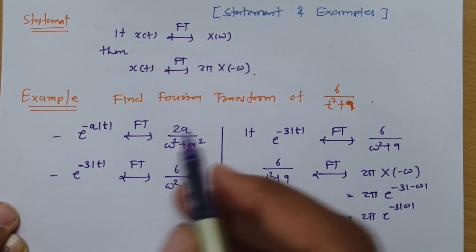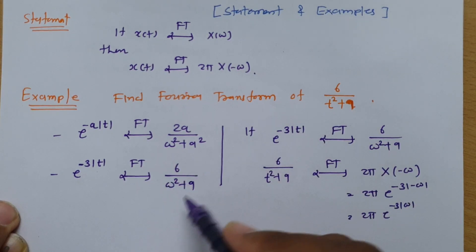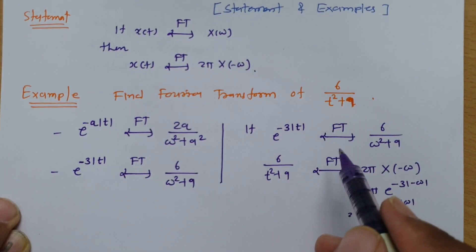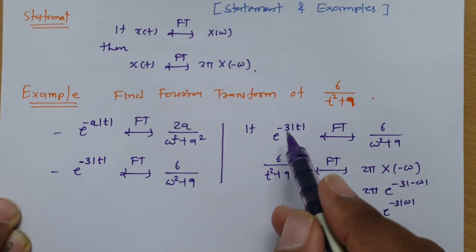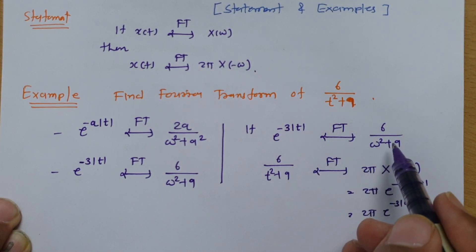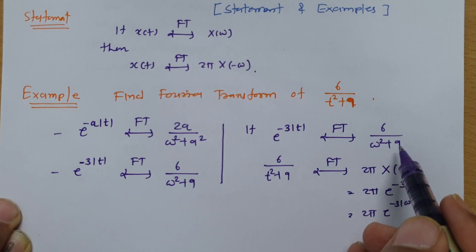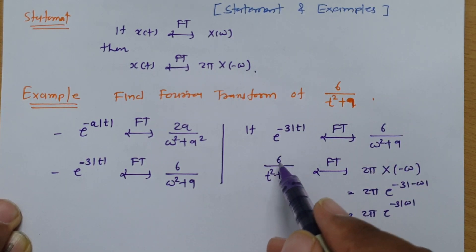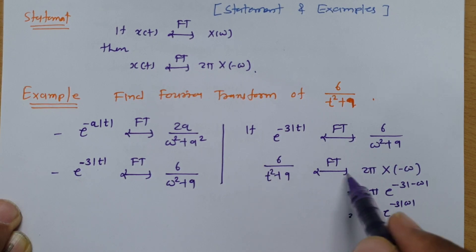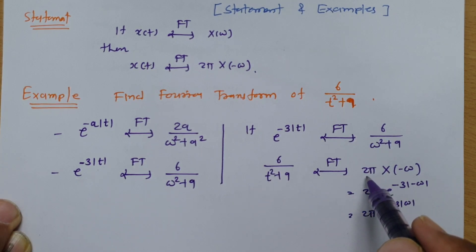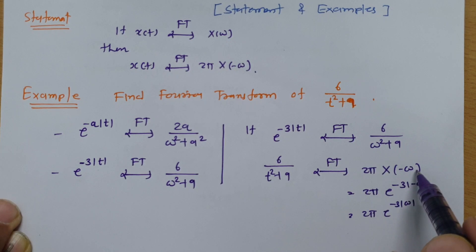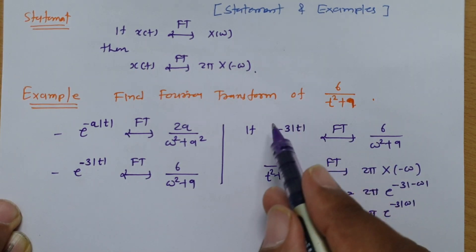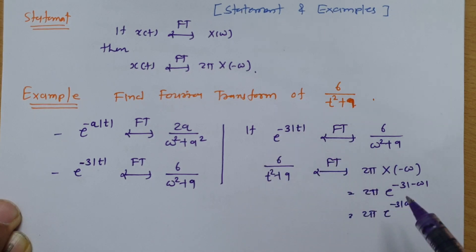All we need to do is replace the time domain variable to frequency domain and then again frequency domain to time domain. So since e^(−3|t|) has Fourier transform 6/(Ω² + 9), by duality the Fourier transform of 6/(t² + 9) is 2π times X(−Ω), where whatever function is in the time domain we replace it with Ω.